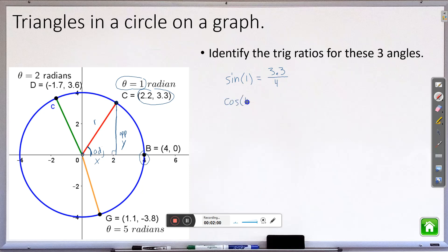Cosine of, again the angle is still 1, the adjacent is the X value, so that is 2.2 over 4, and tangent of 1 is the opposite, which is 3.3, which is the Y value, over the X value, which is 2.2. Alright, now it is good for us to take a look and put those decimals in there as well. That'll be helpful in a little bit. So 3.3 divided by 4 is 0.825. 2.2 divided by 4 is 0.55. And 3.3 divided by 2.2 is 1.5.